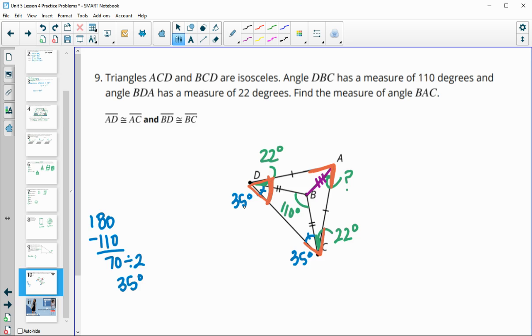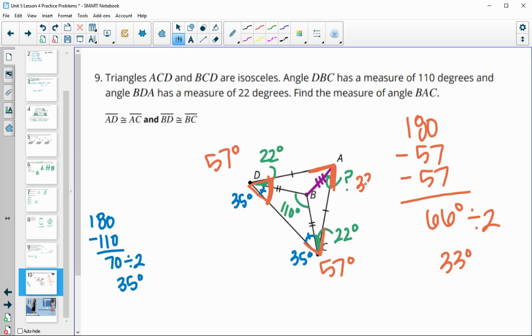this larger angle, and this larger angle form a big triangle. And so this one here is 35 plus 22 or 57 degrees. This one over here is also 57 degrees. So we could do 180 minus 57 minus 57. And this would give us 66 degrees for this big angle A. Then we would just need to divide this by 2. And that would give us 33 degrees for this little angle here.